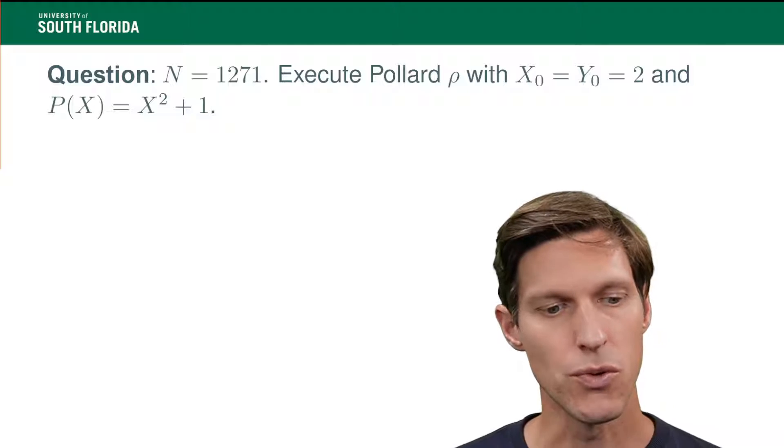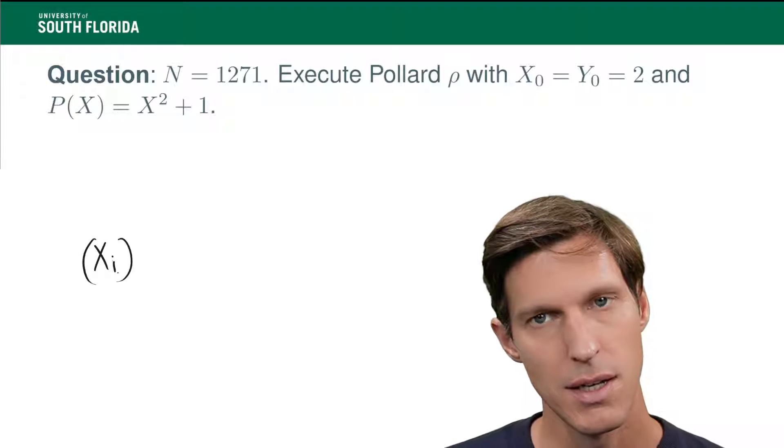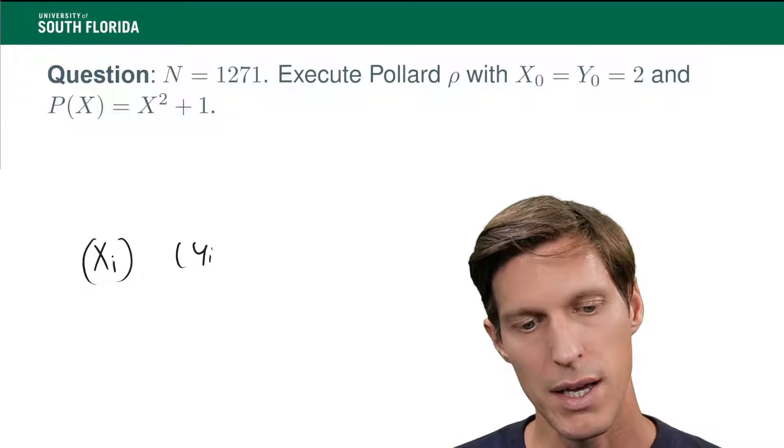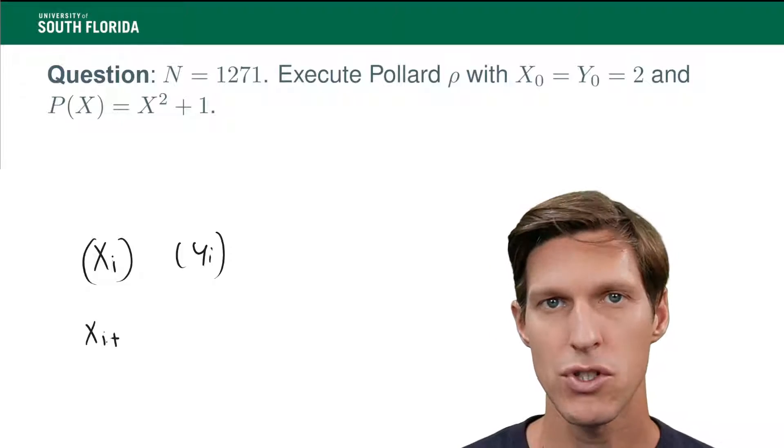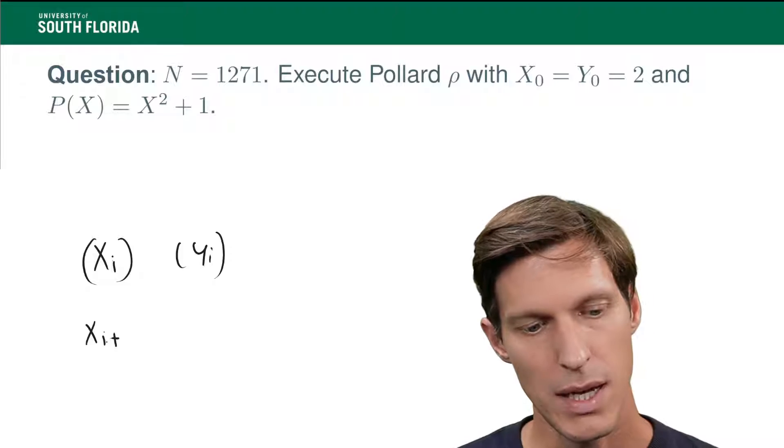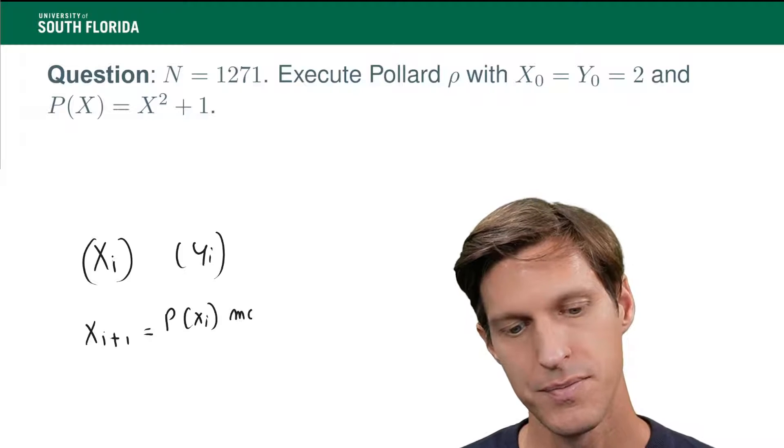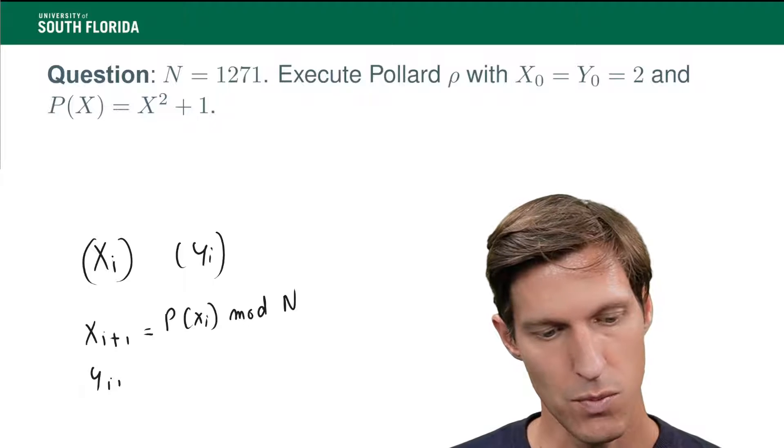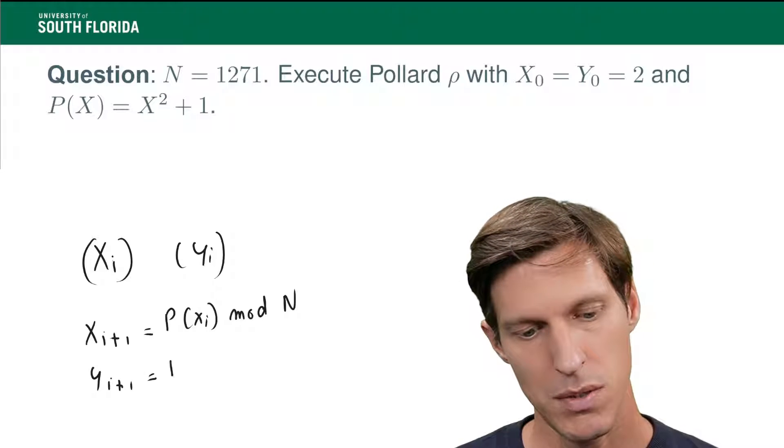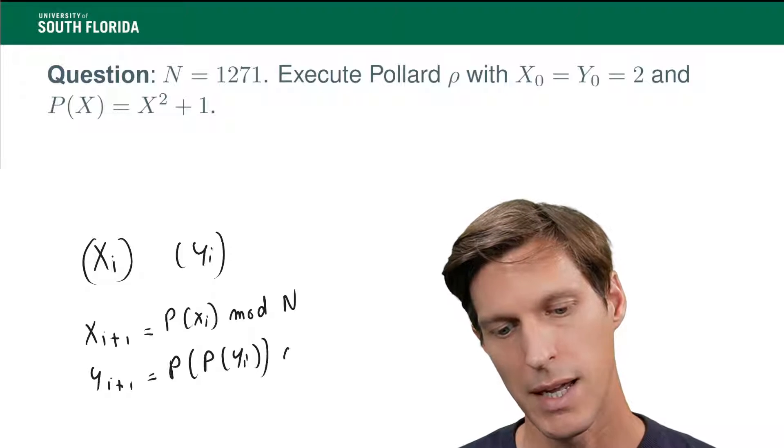Now, what are we going to do? We're going to construct a sequence of xi's and yi's. The starting points are given to you. xi plus 1 is going to be p of xi mod N, and yi plus 1 is going to be p of p of yi mod N.